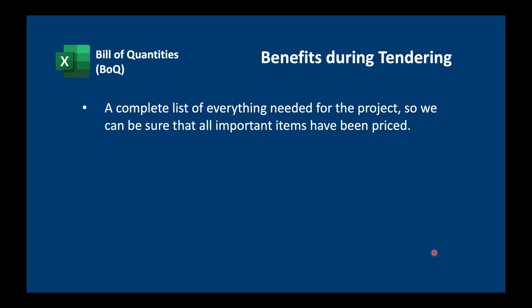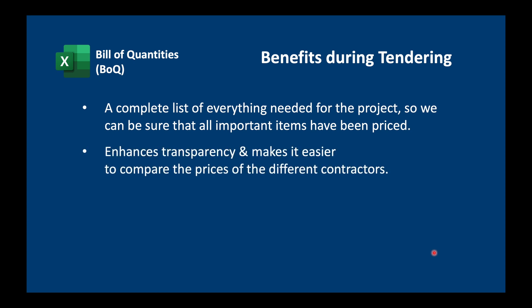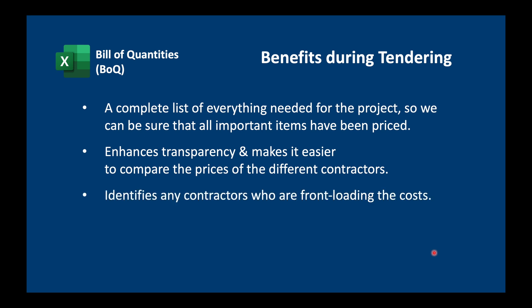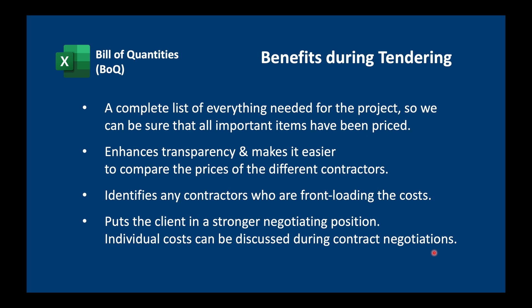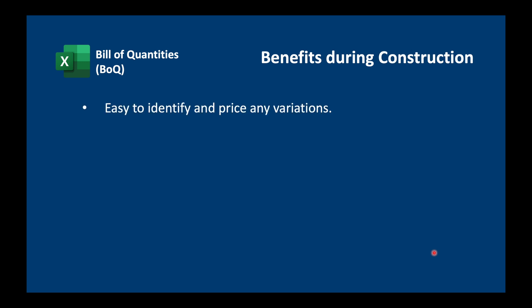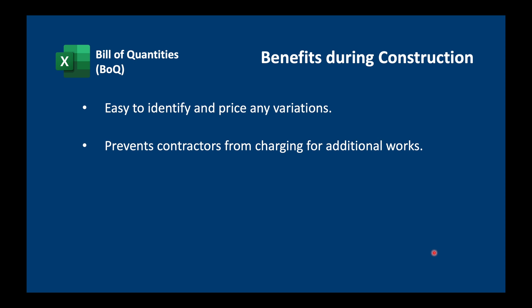During tendering, one of the main benefits of the BOQ is that we have a complete list of everything needed for the project, so we can be sure all important items have been priced. It enhances transparency and makes it easier to compare prices from different contractors. We can also identify contractors who are front-loading costs — for example, charging a lot for mobilization with very low rates for everything else, meaning they could mobilize, then demobilize without completing the project and still get paid. The BOQ puts us in a strong negotiating position to discuss individual costs during contract negotiations.